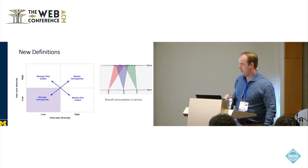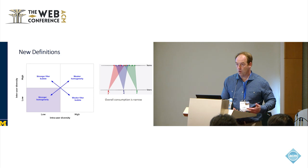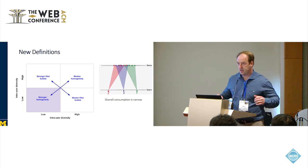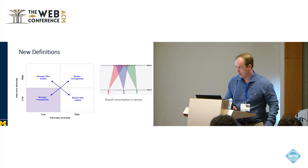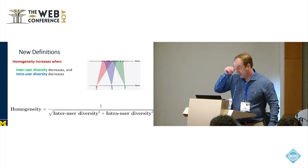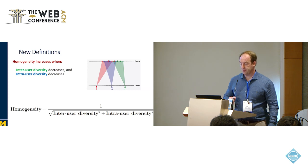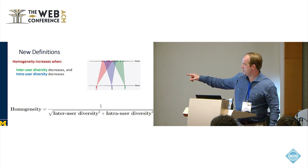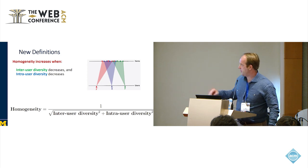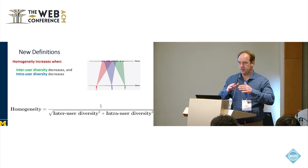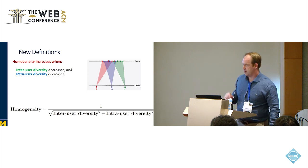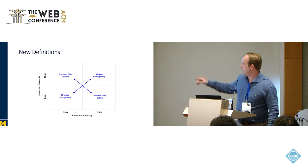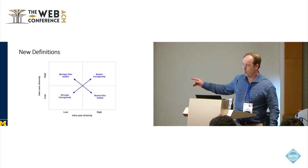Now let's look at homogeneity. Homogeneity means the overall consumption of users is narrow. There's a vast swath of items that users could consume, but if it's homogeneous, they're consuming the blockbusters. Not a lot of niche products are being consumed. Intuitively, homogeneity increases when inter or intra-user diversity decrease. We represent homogeneity as a ratio: inter-user diversity over intra-user diversity squared. This is measuring the variance of the consumption of overall products, because it's a convolution of the two. Strong homogeneity is on the lower left, and weak homogeneity is on upper right.